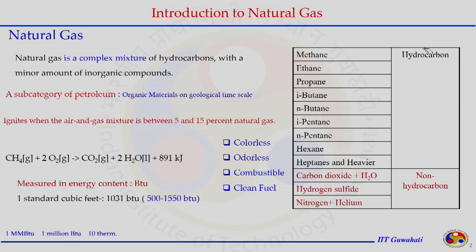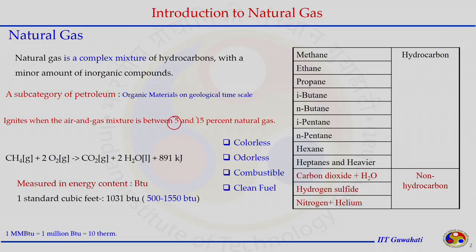Natural gas ignites when the air-gas mixture is between 5% and 15%. The 5% is the lower explosive limit and 15% is the higher explosive limit. The combustion reaction is: CH4 + 2O2 gives 1 mole of CO2 and 2 moles of H2O, with energy generation of 891 kJ/mol.